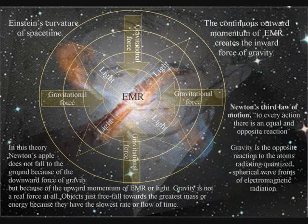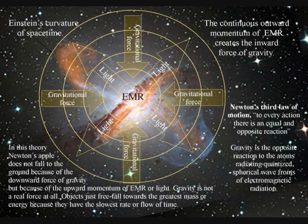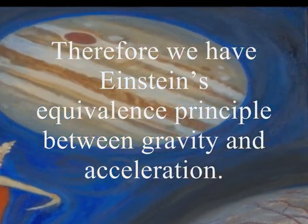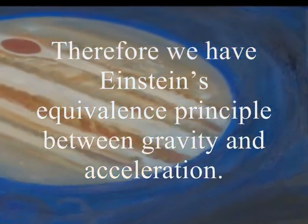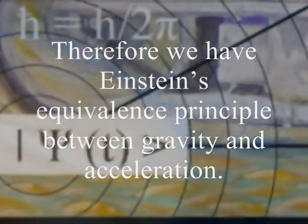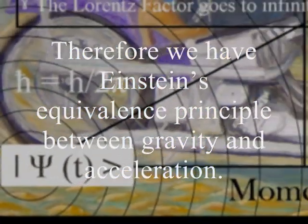In this theory, gravity is a secondary force to the electromagnetic force. Objects simply freefall towards the greatest mass or energy because it has the slowest rate that time flows.